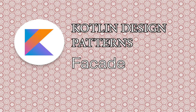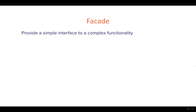In this video we're going to talk about the facade pattern. The facade pattern is quite simple and self-explanatory. The main idea is that we want to provide a simple interface to complex functionality. Think about a third-party library that you might be using — you have really no idea what's going on behind the scenes, all you know is what is provided by the interface, and you're not really concerned with how the library does what it does.